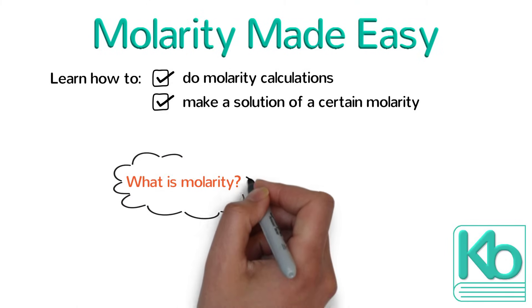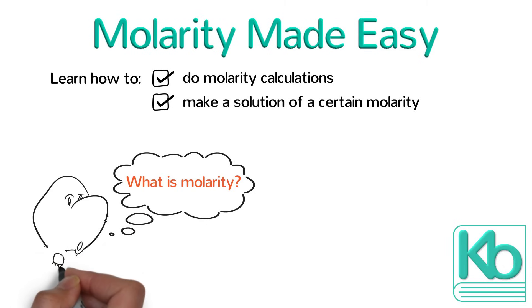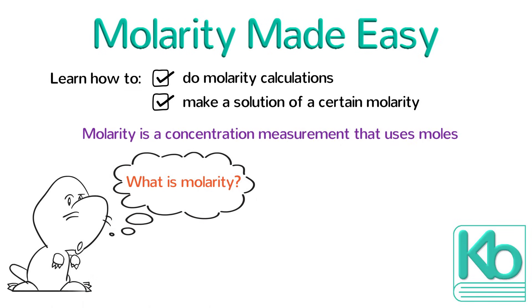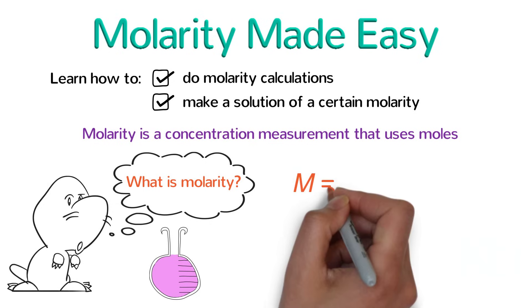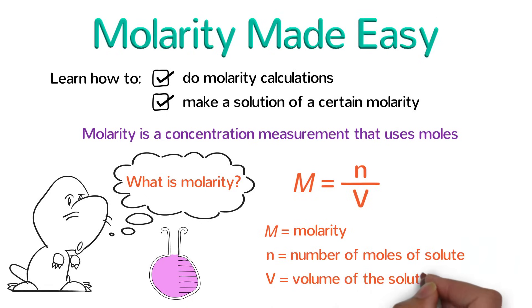As the name suggests, molarity has something to do with moles, and we remember that the mole is a scientist's way of counting the number of particles there are. Molarity is a concentration measurement that uses moles. It measures how concentrated a solution is based on the number of solute particles dissolved. The formula of molarity is M equals N over V, where M is the molarity, N is the number of moles of solute, and V is the volume of the solution in liters.